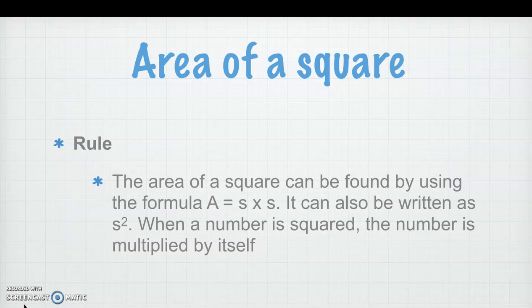It can also be written as S squared. When a number is squared, the number is multiplied by itself. So the formula to find the area of a rectangle was A equals length times width. To find the area of a square is going to be A equals S times S.